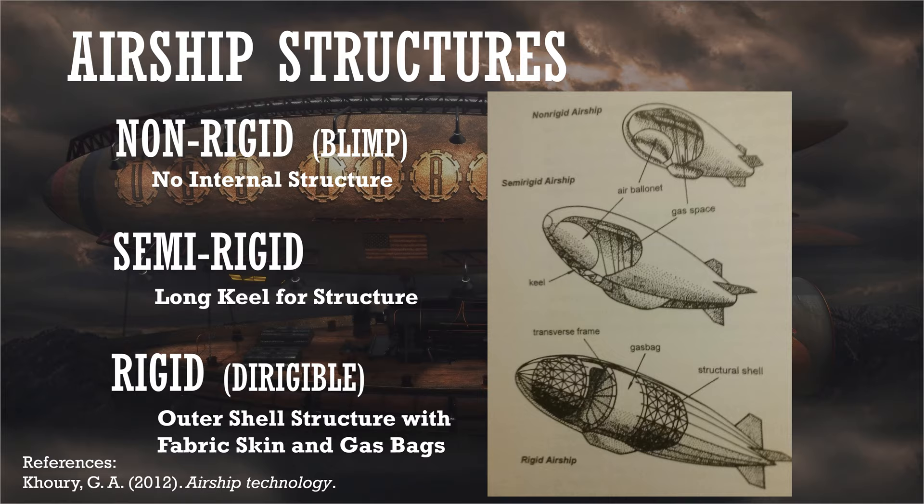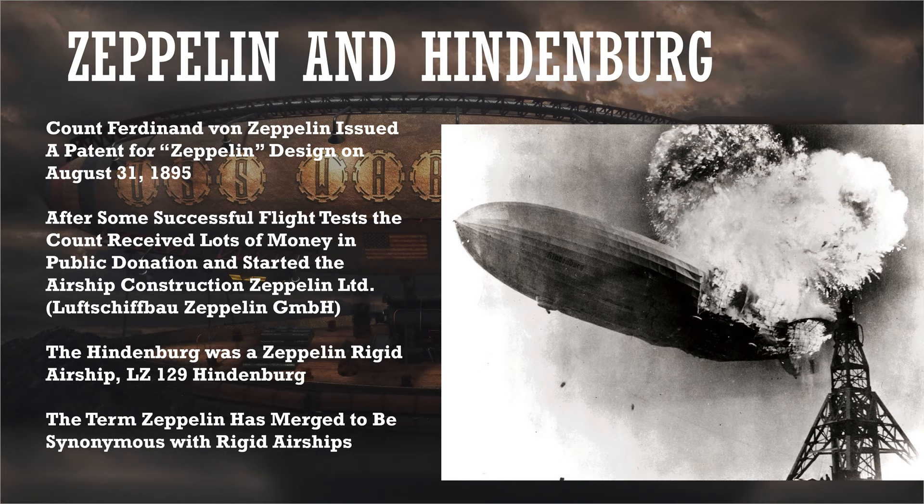A mixture of a non-rigid and rigid ship would be the semi-rigid. This is essentially a non-rigid airship; however, it will have a keel along the bottom edge. So if you hear the name blimp, it usually means non-rigid. And if you hear the name dirigible, it usually means rigid.